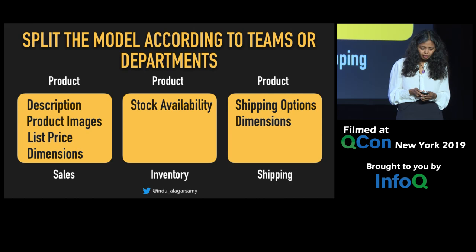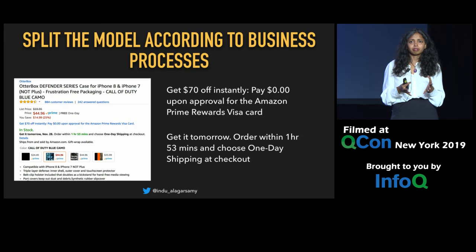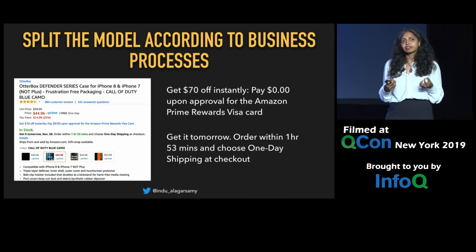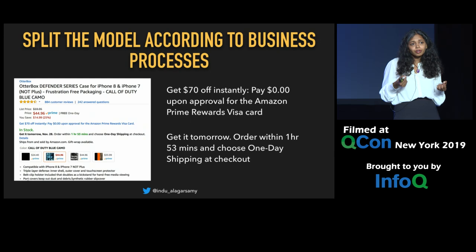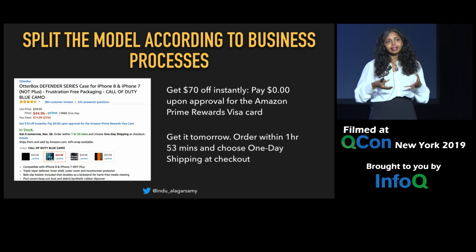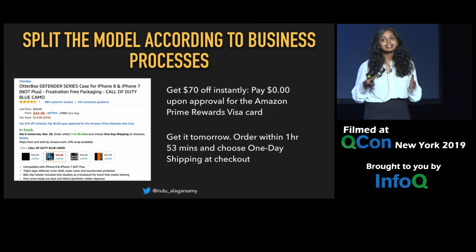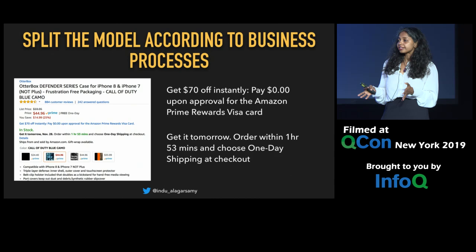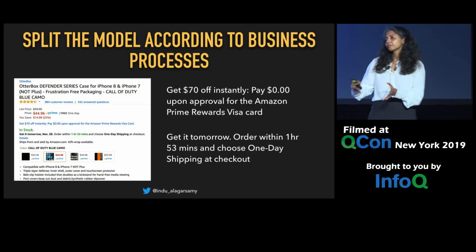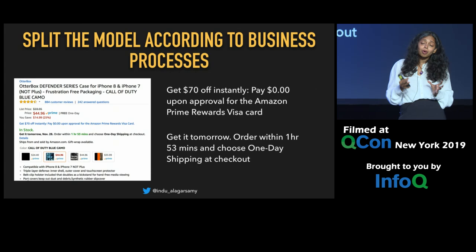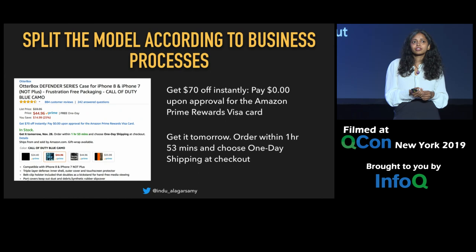Another way is to look at the business processes the business has. Domain-driven design really pushes looking at behavior. The interesting part of the business is in the behavior. If we can capture the behavior of the system in our code, our code is going to be more aligned with the business. If we design our code in such a way, then when they come up with a new requirement, we can go along with those changes. We can't get there by having one model — it evolves as rules and business requirements change.